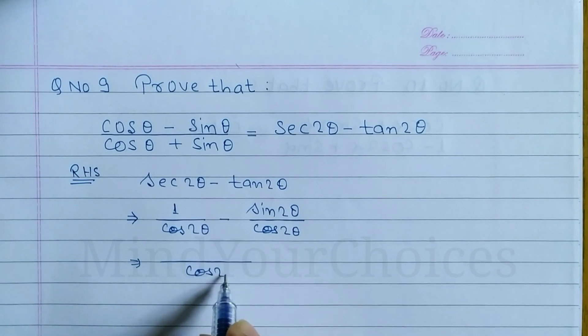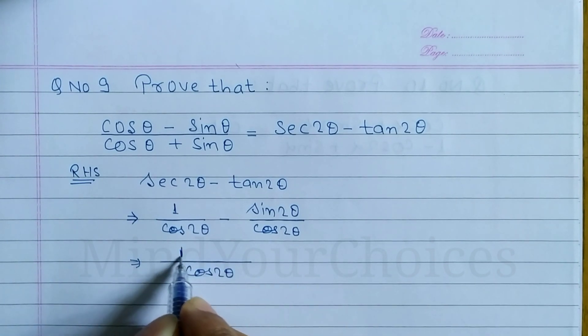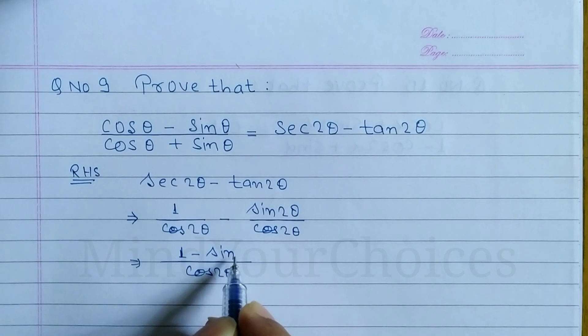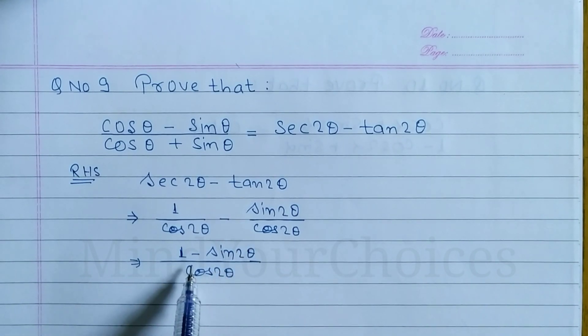cos 2 theta is 1 minus sin 2 theta. Now we have sin 2 theta plus cos 2 theta. We can write 1 by cos 2 theta.